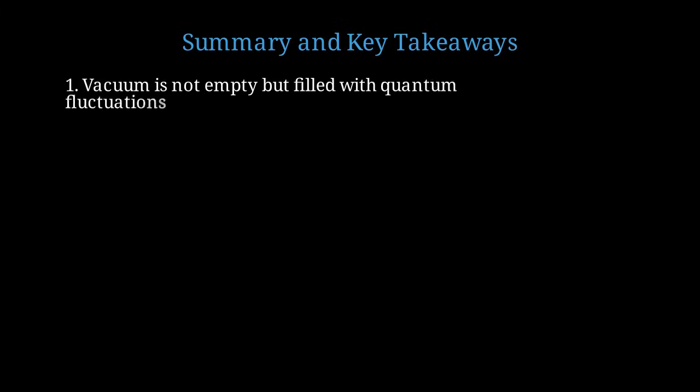Let me summarize the key points we've covered in this lecture about the dynamical Casimir effect. First, the quantum vacuum is not truly empty. It contains zero-point energy fluctuations and virtual particle-antiparticle pairs that constantly appear and disappear. Second, rapidly moving or oscillating boundaries can convert these virtual photons into real, detectable photons. This is the dynamical Casimir effect.